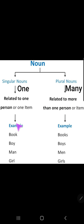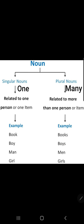Examples of singular nouns: book, boy, man, girl. In plural, plural nouns are related to more than one person or item. For example, book becomes books, boy becomes boys, man becomes men — 'a' changes to 'e' — and girl becomes girls, with 's' added.